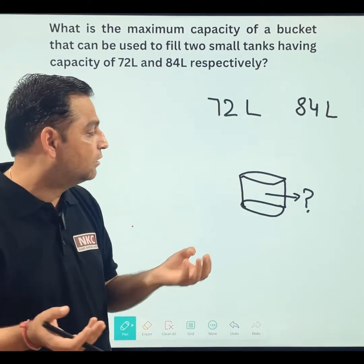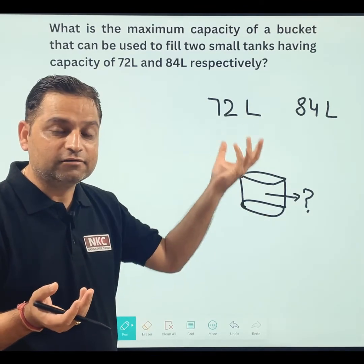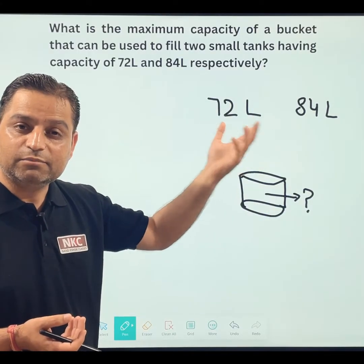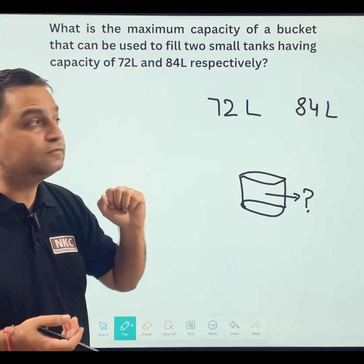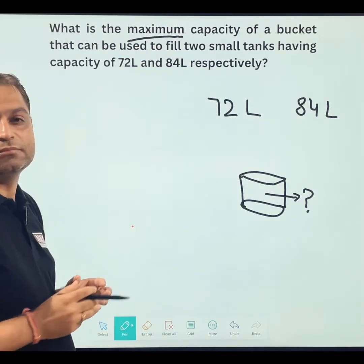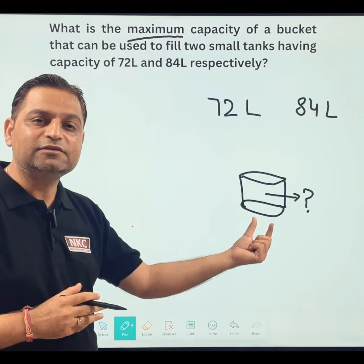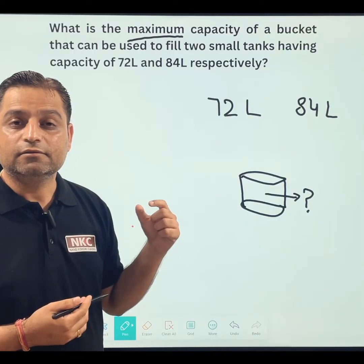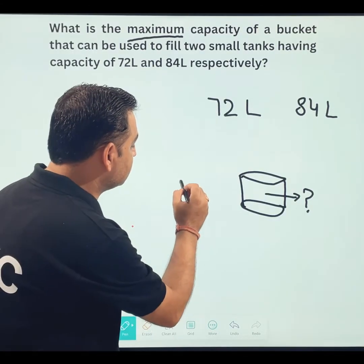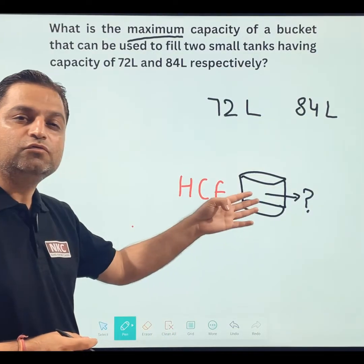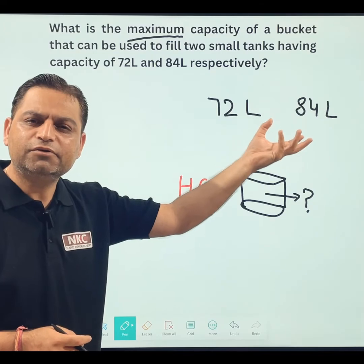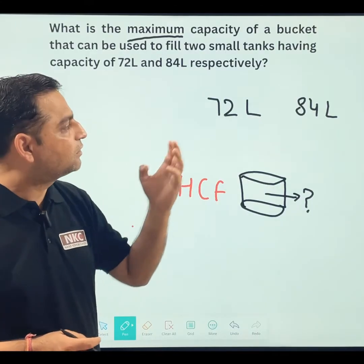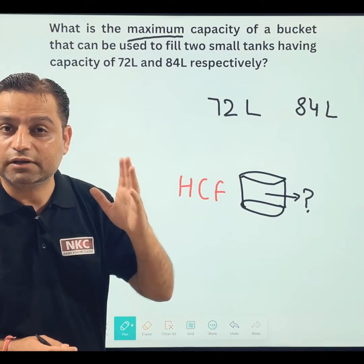Now, there can be many numbers. The capacity of the bucket can be 2 liters — they can fill these two tanks. Capacity of bucket can be 4 liters also, and still these buckets can fill the tanks. But the point is, if you read the question, it says maximum. Maximum means we need to find the maximum capacity of the bucket, not 2 and 4 specifically. This gives me the idea of finding HCF, because 2 and 4 are factors of 72 and 84, but I need the highest factor.